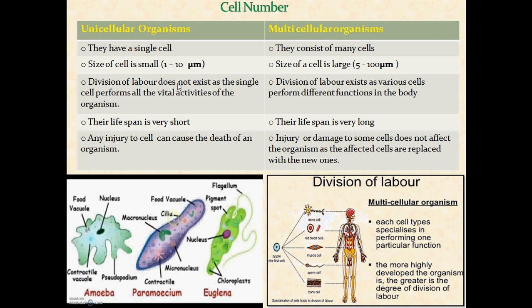If a single cell performs all the functions of an organism, such an organism will be considered a unicellular organism. If there are many cells and by division of labor they perform different functions in the body of an organism, such an organism will be considered a multicellular organism.